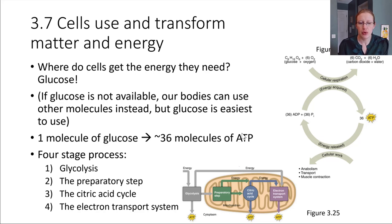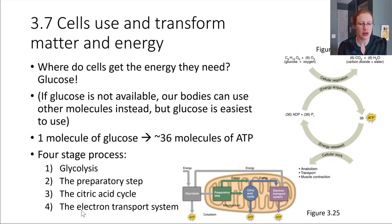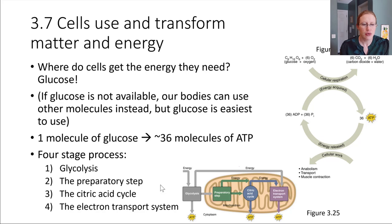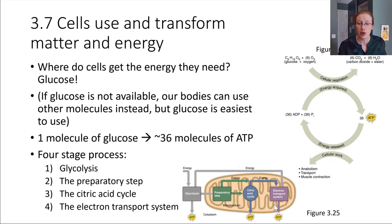Harvesting energy from glucose takes place through a four-step process: glycolysis, the preparatory step, the citric acid cycle, and finally the electron transport system. The last three all take place inside of a mitochondria. Glycolysis happens out in the cytoplasm of the cell and makes a little bit of ATP, but the other three steps, inside the mitochondria, are where most of the ATP production happens.